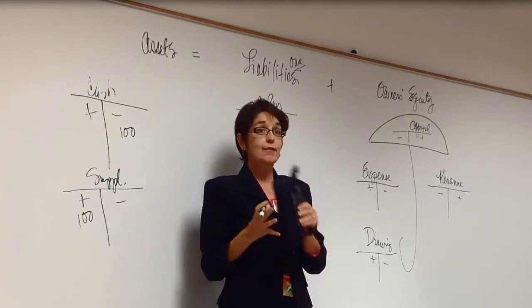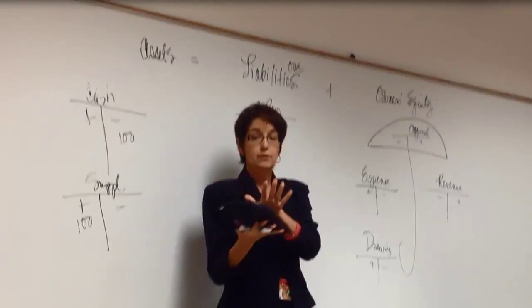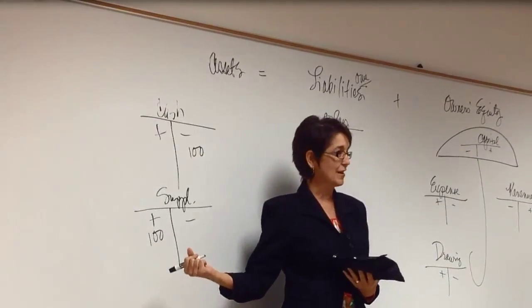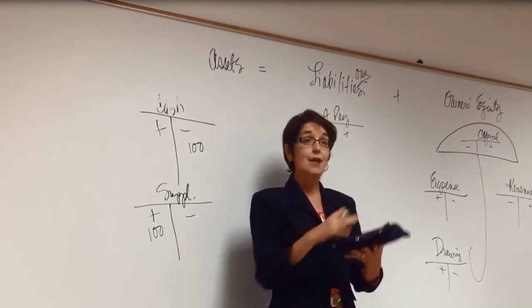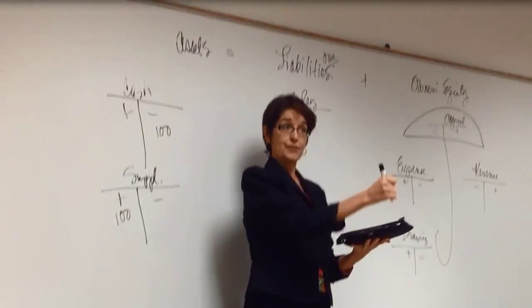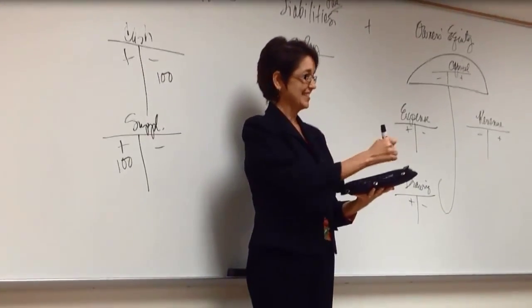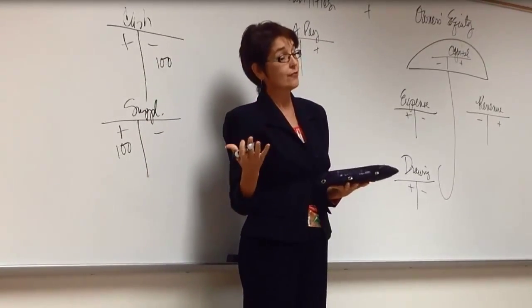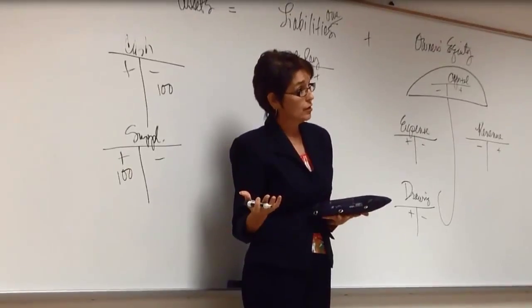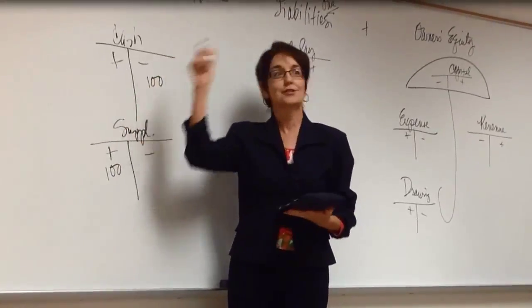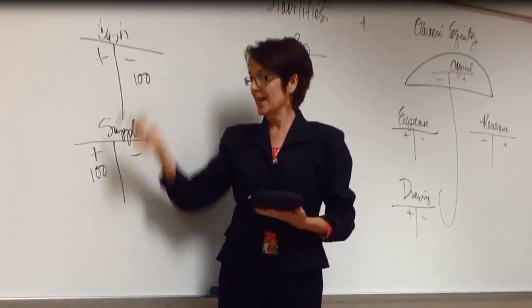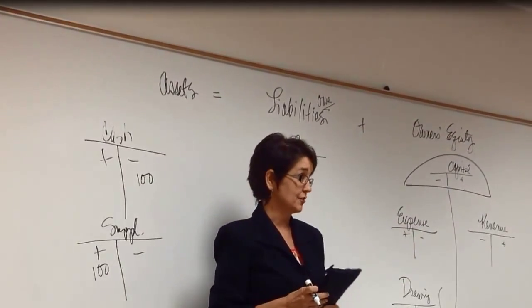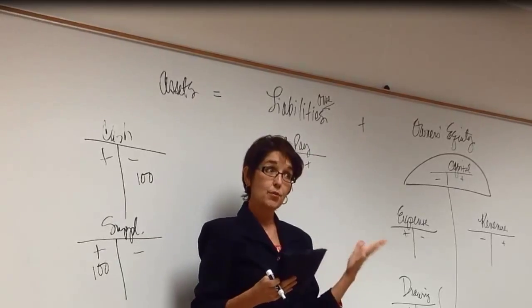Up to this point, you have had something that we call a source document, a receipt maybe, for these $100 worth of supplies. And whenever I got that receipt, all the supplies was a debit and my credit was the cash. And then whenever I started to post into my ledger, I would post my date, my debit, my credit to all of those accounts in my ledger. That's what we've done up to this point.